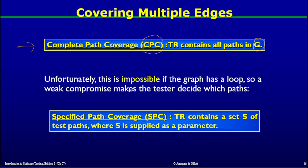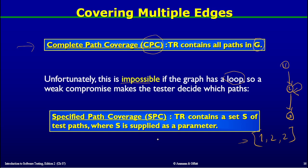Unfortunately, CPC is impossible if the graph has a loop. When we have a structural representation of code with a loop, the number of iterations is not mentioned in the graph structure. So paths like (1,2), (1,2,2), (1,2,2,2), and so on are all valid. You can unfold as many iterations of the loop as possible, making the number of paths infinite.